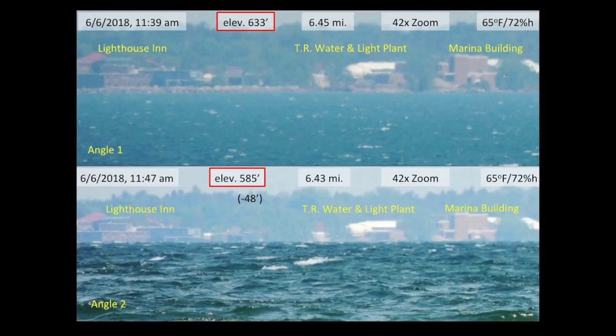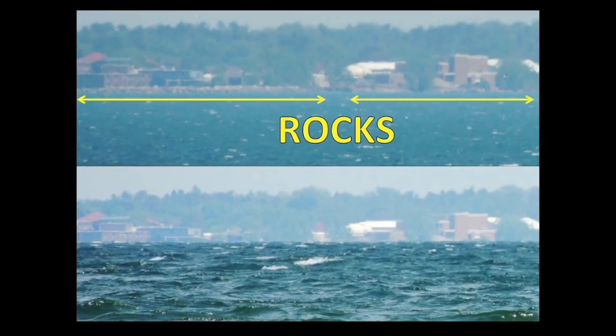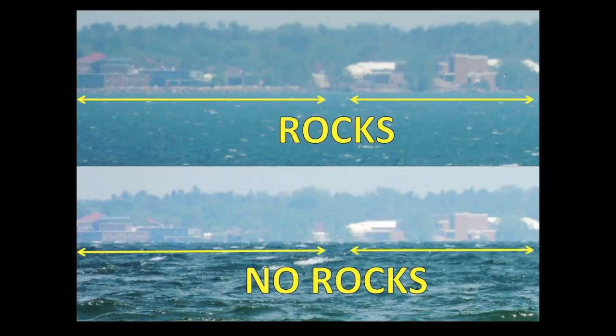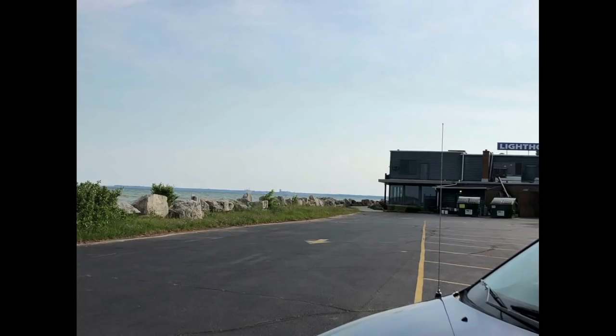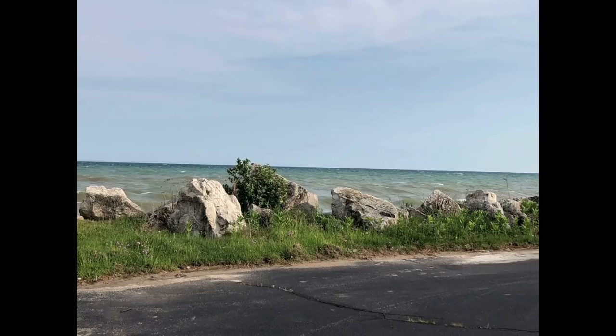Now it's time to analyze my test results. Here are pictures of the landmarks — one from each angle — with date, time, elevation, distance, zoom, temperature, and humidity recorded. The only real difference is the elevation: 48 feet. In the first picture, we see rocks. In the second picture, we see no rocks. Placing pictures of just the end side by side with the tops of the buildings lined up, you can clearly see the rocks are visible from one angle but not the other. I even drove down the next day to confirm — these are real boulders, yet they are clearly not visible from the lower angle.